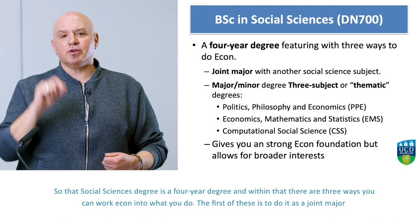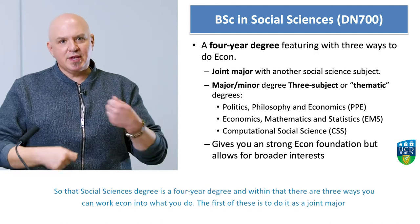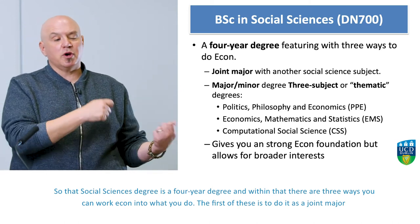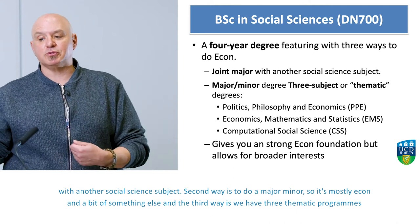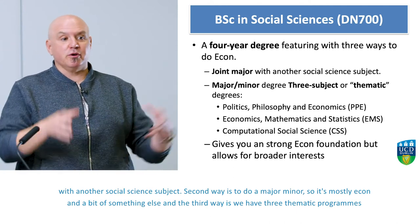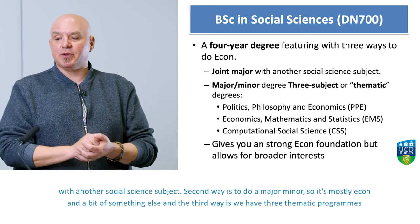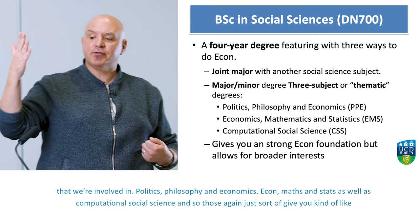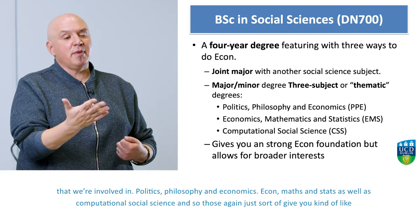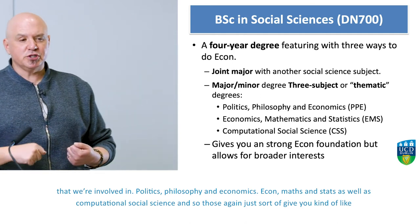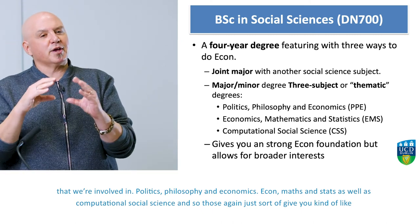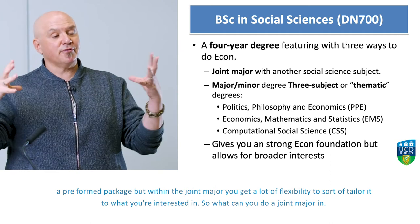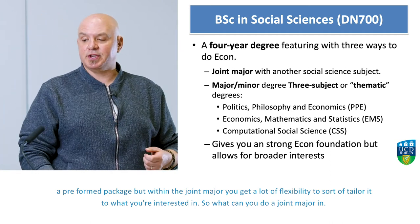The social sciences degree is a four-year degree. Within that, there are three ways you can work economics into what you do: as a joint major with another social science subject; as a major-minor, so mostly economics with a bit of something else; or through three thematic programs — politics, philosophy, and economics; economics, math, and stats; or computational social science. The joint major gives you a lot of flexibility to tailor it to what you're interested in.